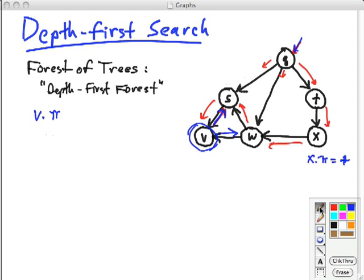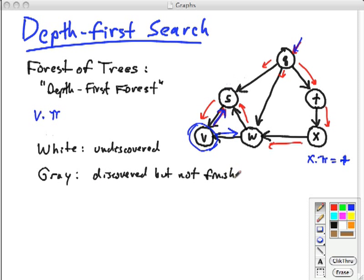Both of these algorithms have three colors that they color the nodes. They color them white, which means they're undiscovered, and we color them gray, which means that they're discovered but not finished. And we color them black, which means we have finished with them.